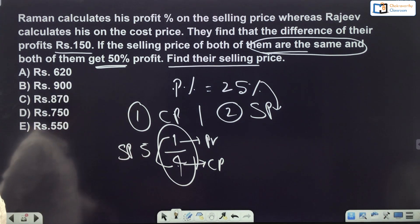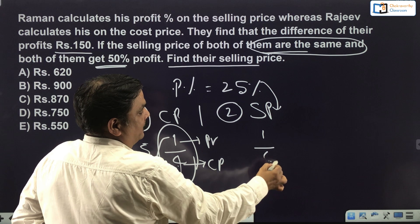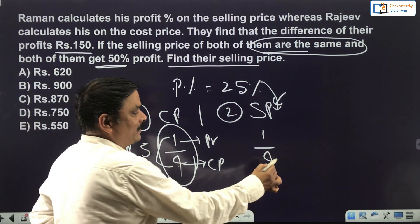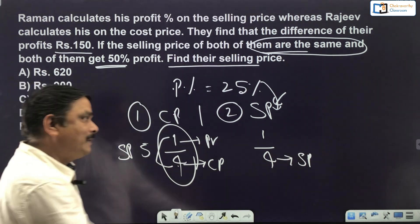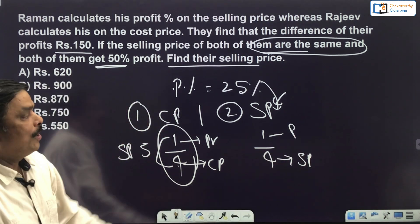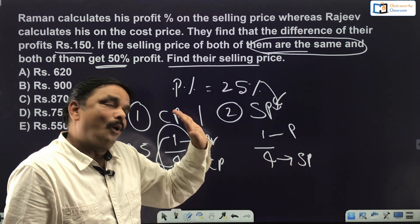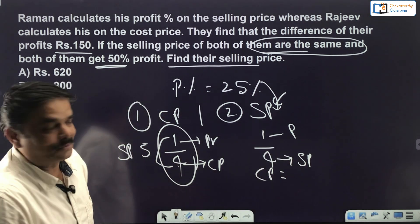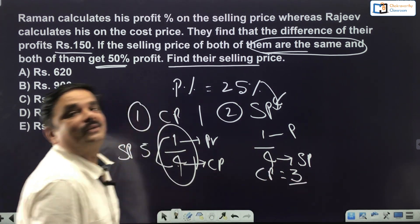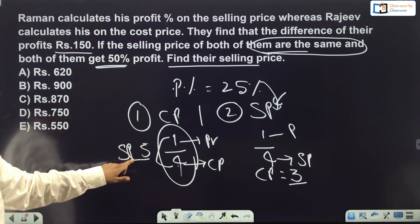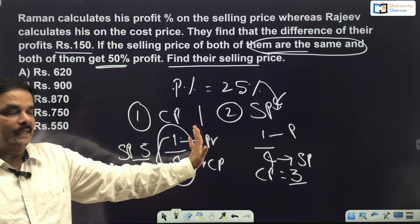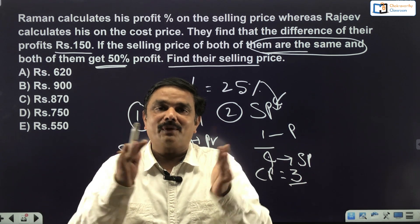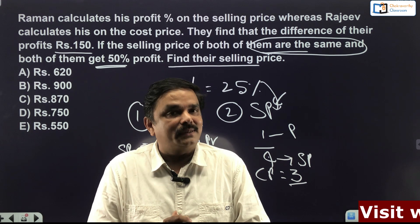When profit is on selling price: selling price is 4, profit is 1, so cost price = SP − profit = 4 − 1 = 3. Compare: in the first case SP = 5, CP = 4; in the second case SP = 4, CP = 3. Profit is the same in both cases but the cost price and selling price differ. This is the backdrop of the question.